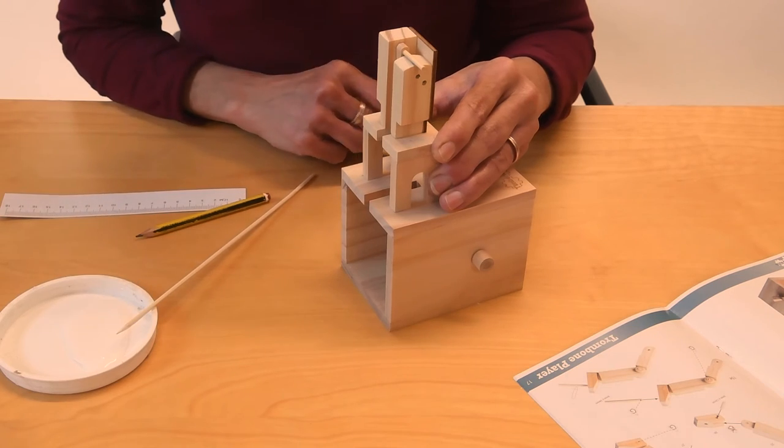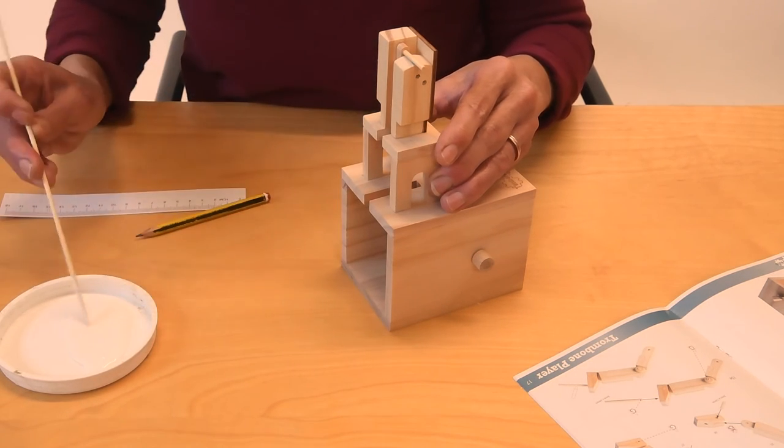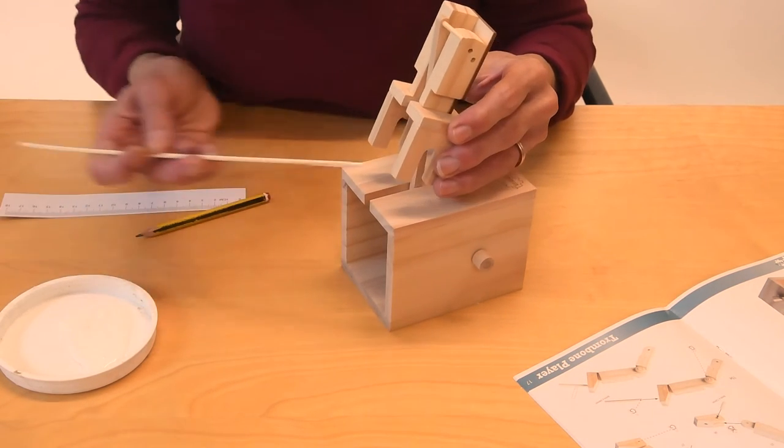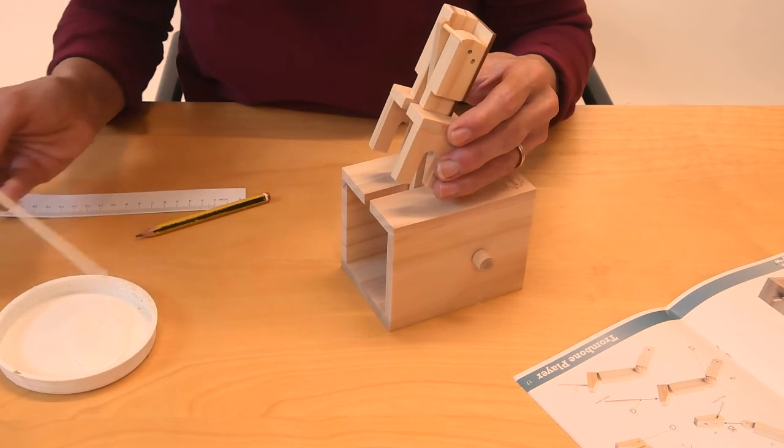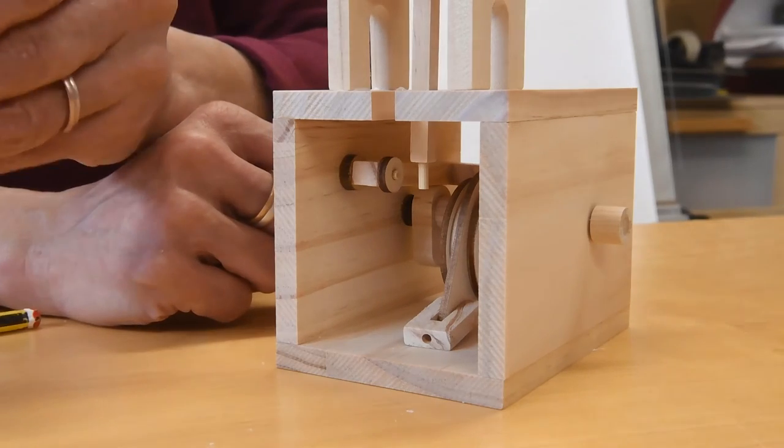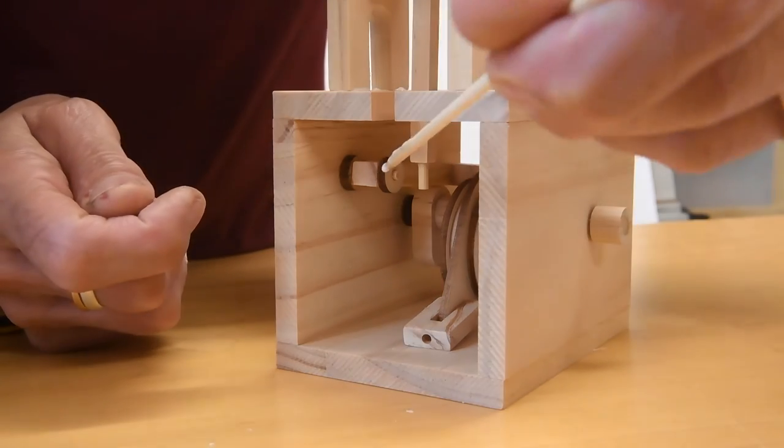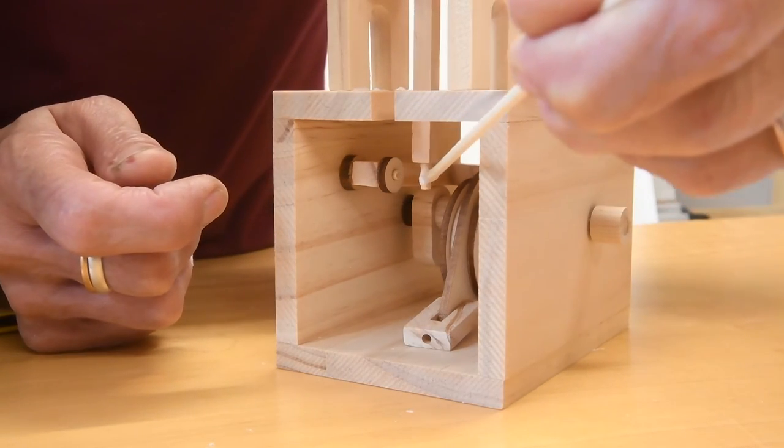So once you've confirmed that you've got your mark in the right place, you can then go ahead and glue the bottom of the stool, and you can glue the peg into the block below.